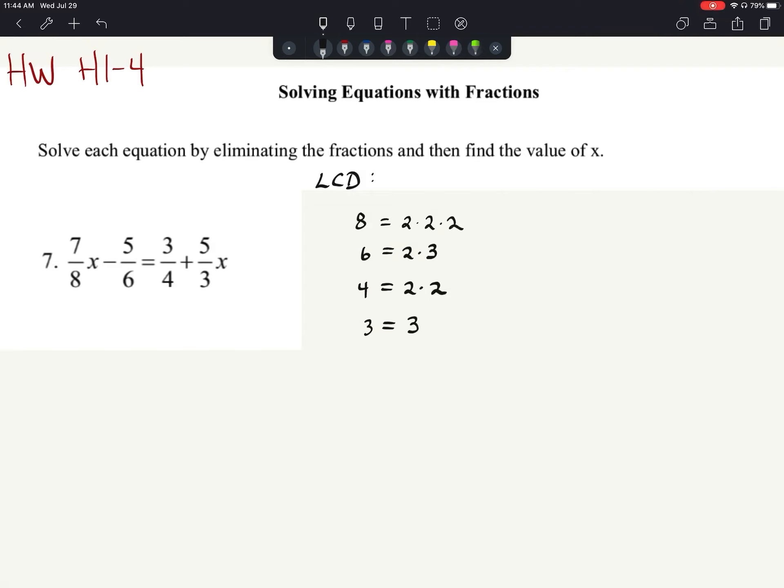Our least common denominator is going to have to be divisible by all the factors possible here. When we look at this, our 8 has three 2s, so our LCD has to be divisible by 2 to the third power. It has to be divisible by three 2s. Six already has a 2 in it, but it also has a 3, so we have to have at least one 3 in there. Four has two 2s, which was already covered because both of those 2s are here.